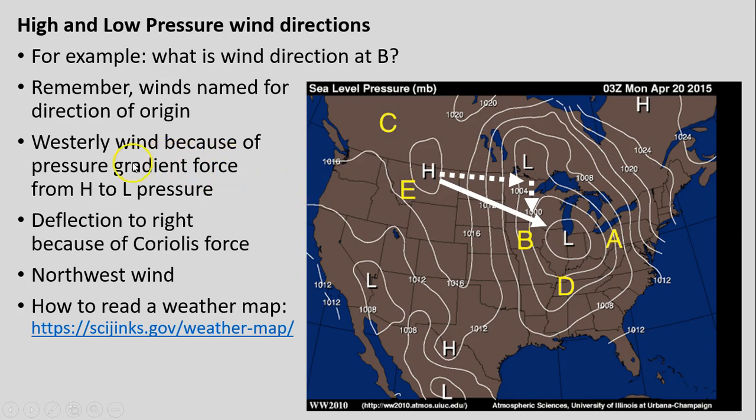Because of that pressure gradient force from high to low pressure, but remember that we also have that deflection to the right because of the Coriolis force. We are moving really to the west but also some deflection to our right. So really our wind is coming not directly out of the west but rather from a more northwest direction as it moves into this low pressure cell over here.